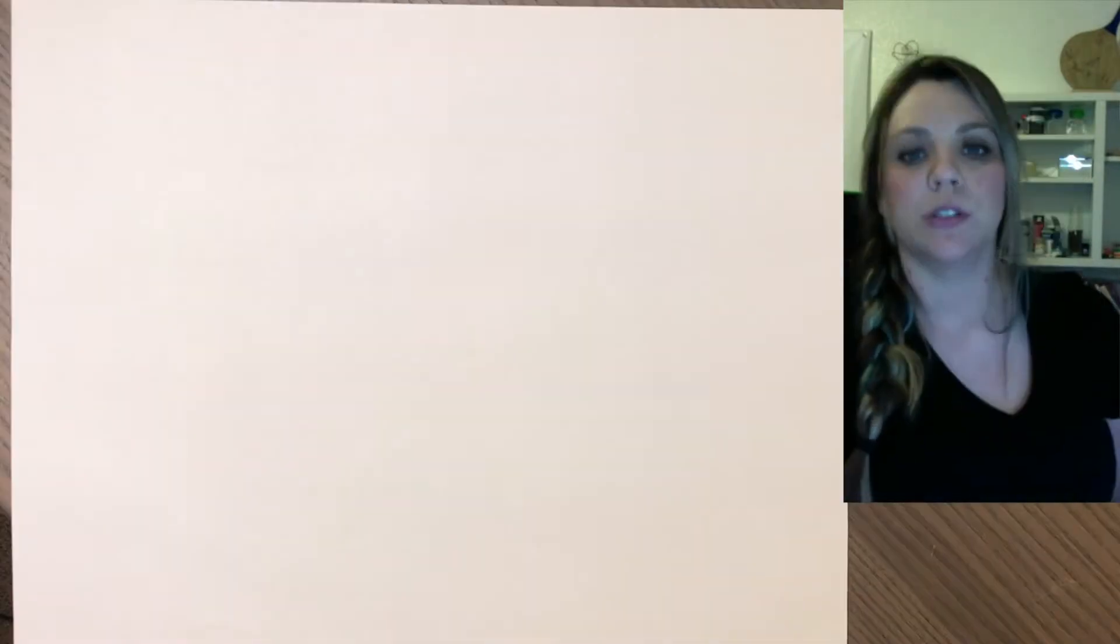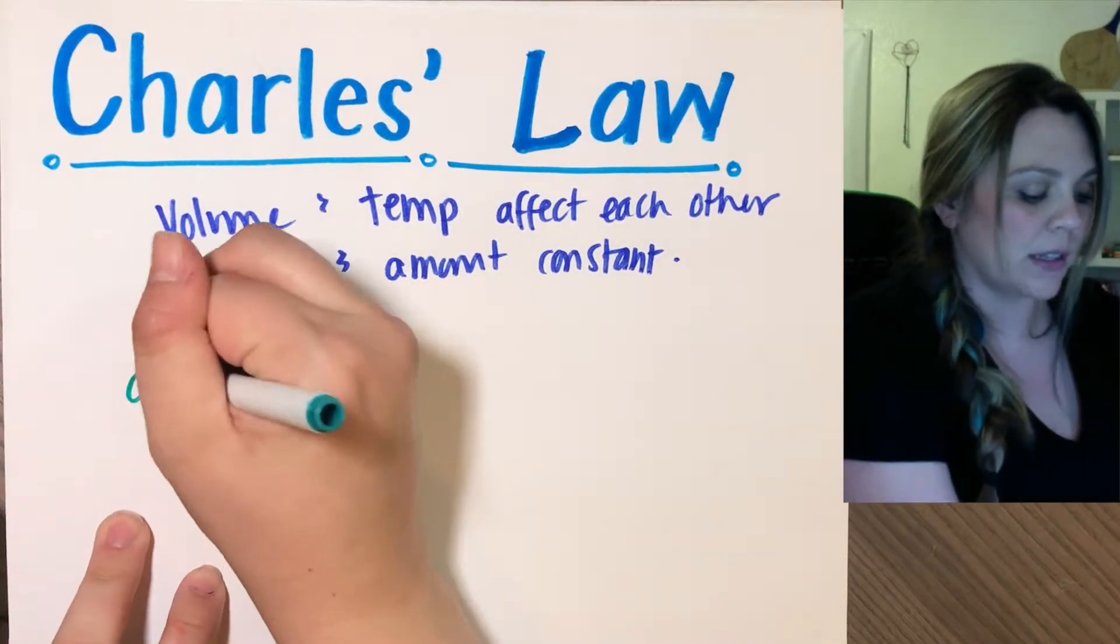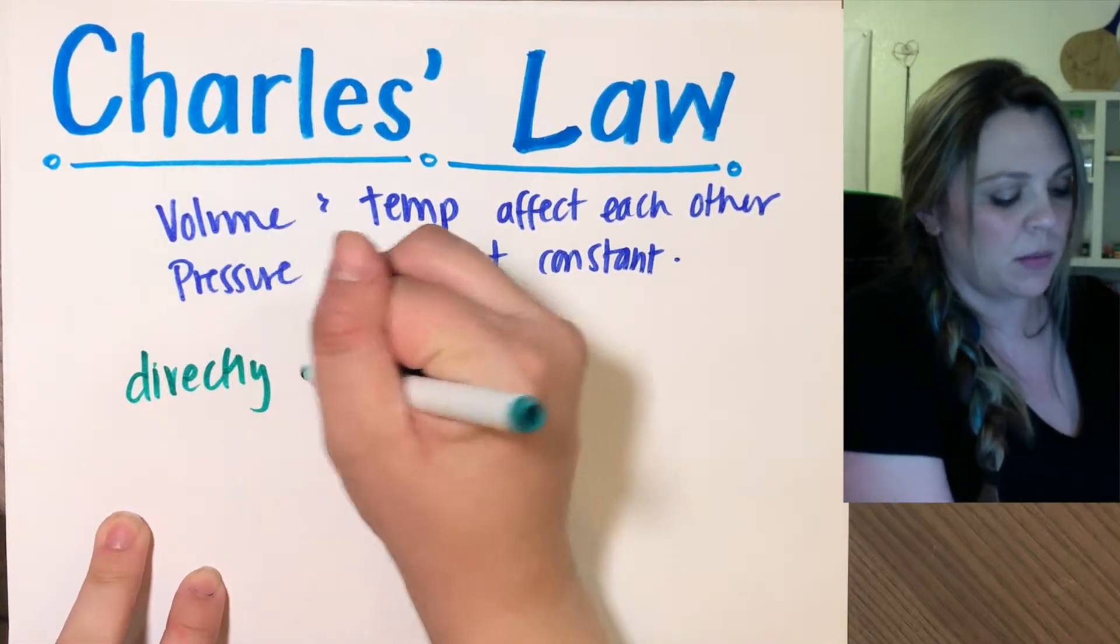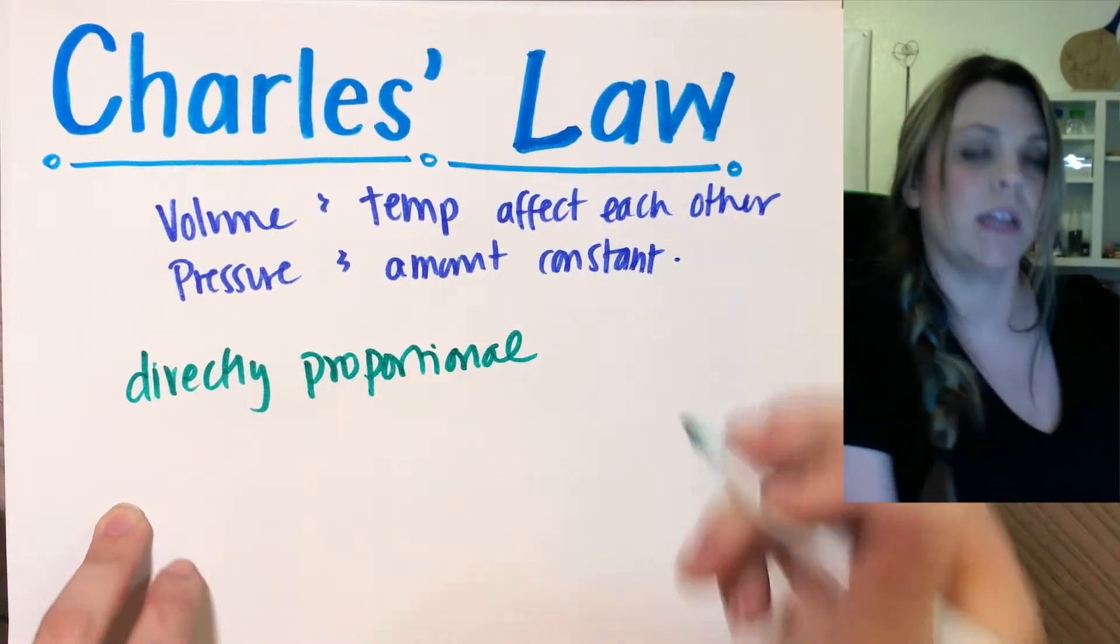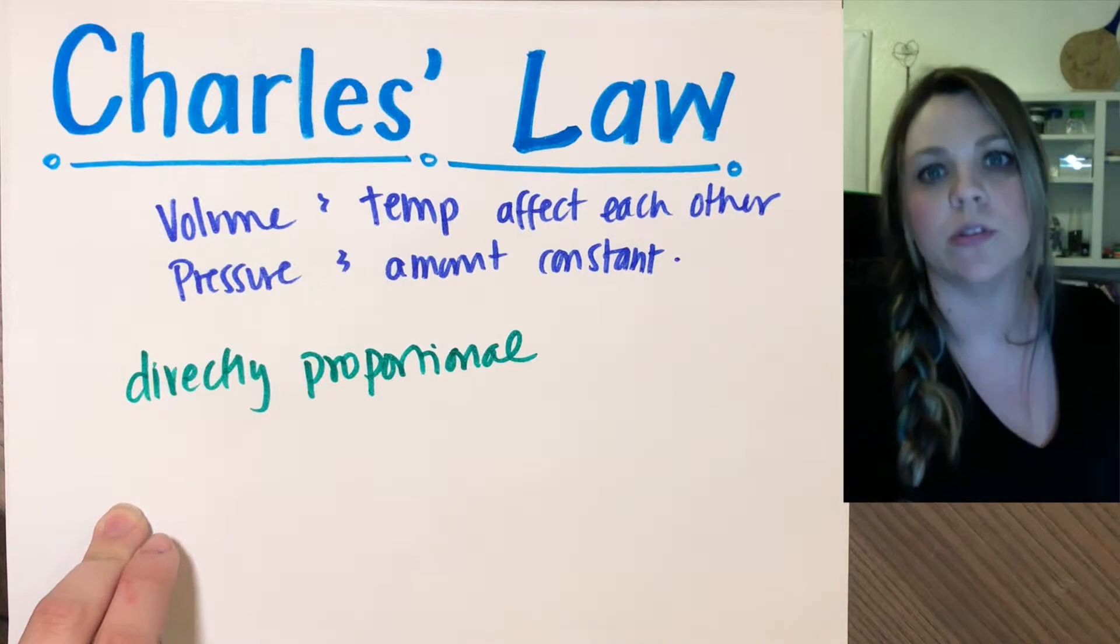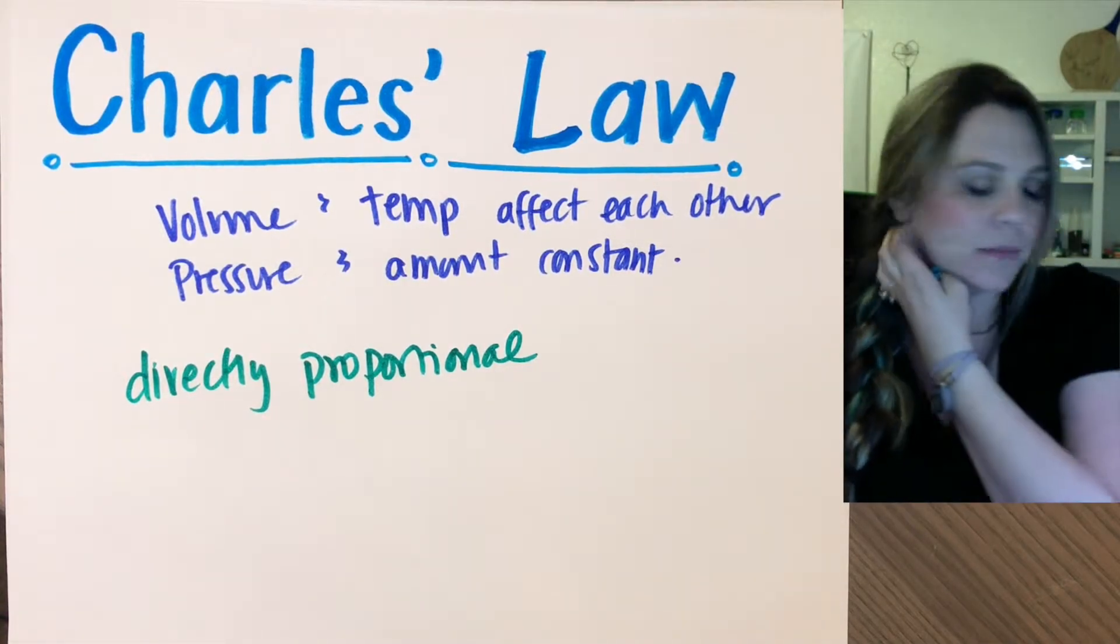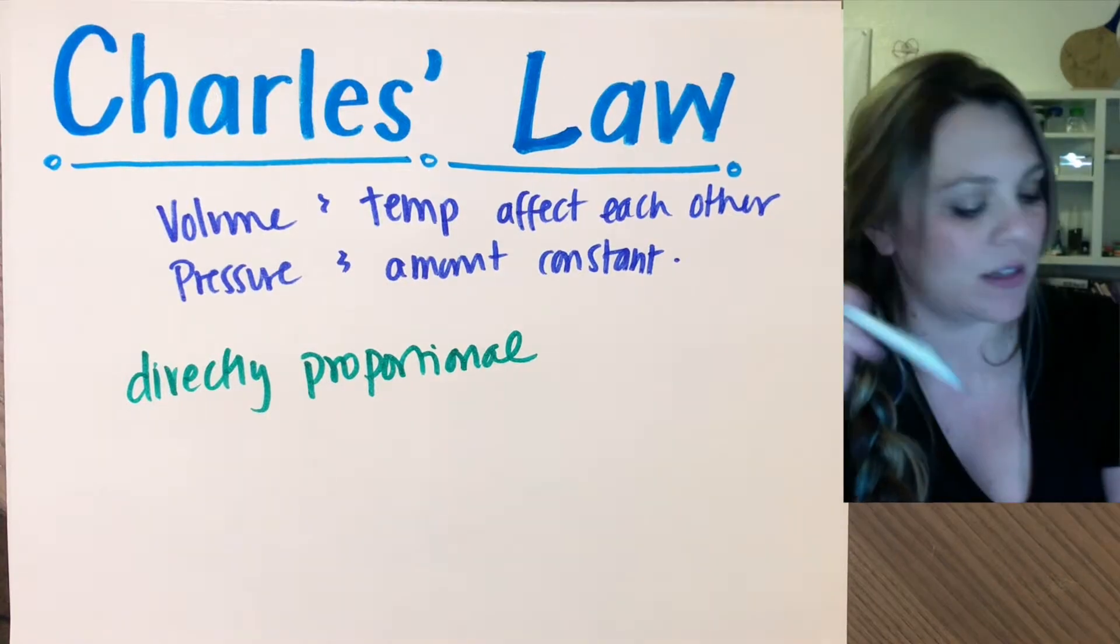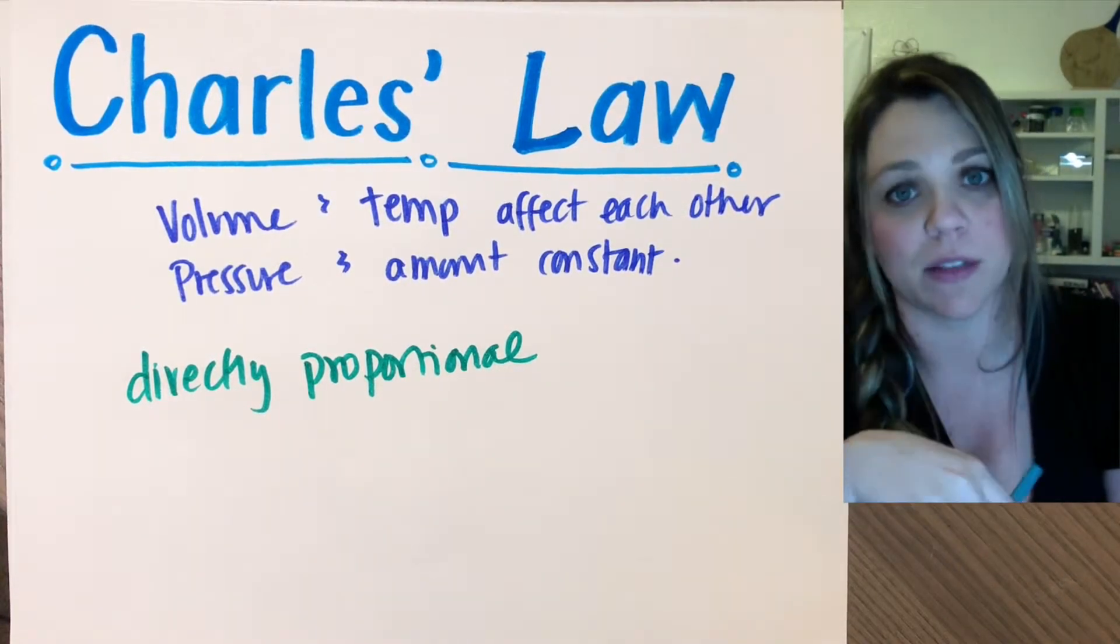Charles' Law - these are directly proportional, meaning if one of them goes up the other one also goes up, if one of them goes down the other one also goes down. A good example of this is if you've ever been rafting in summer.